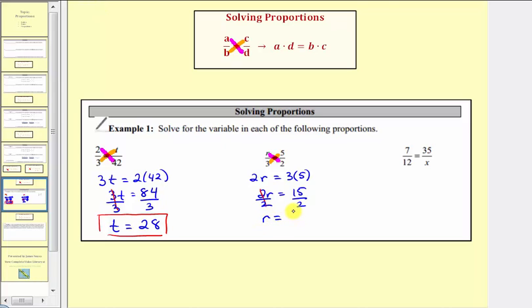So we have r equals 15 halves, which is an improper fraction, though it is simplified. Let's also convert it to a mixed number. To convert 15 halves to a mixed number, we would take 15 and divide by two. There are seven twos in 15. Seven times two is equal to 14. We subtract. We have a remainder of one, which means 15 halves is equal to seven and one half. So when doing the homework, if they ask for the value as a fraction, we enter 15 halves. And if it asks for a mixed number, we'd enter seven and a half.